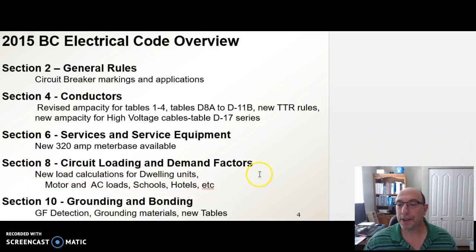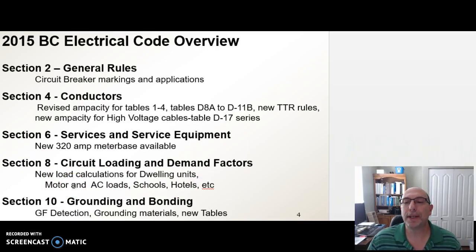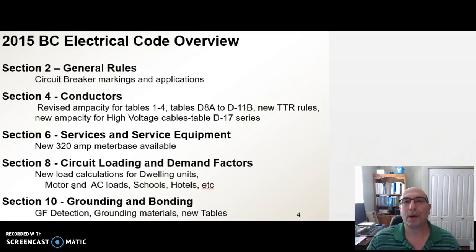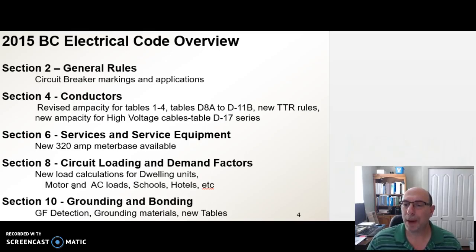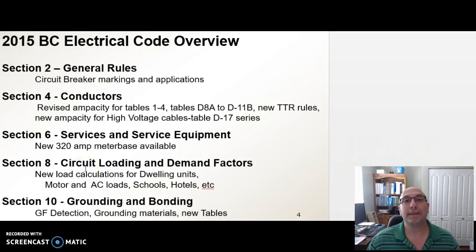Big changes in Section 8: Rule 8200, which deals with residential, and Rule 8202, which deals with multifamily commercial townhouses. Rule 8202 was silent when it came to calculating the demand factors for on-demand hot water heaters, saunas, steamers, hot water steamers, or hot tubs — those were all taken at 25%. In the new code, clarifications have been made: when it comes to multifamily residencies, hot water on-demand heaters, etc., are now taken at 100%.